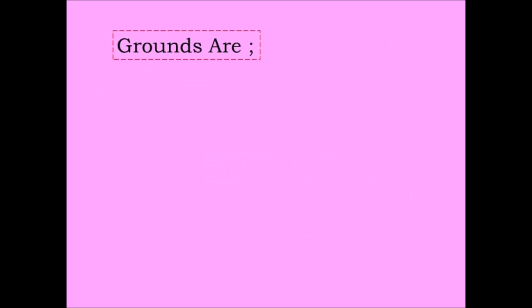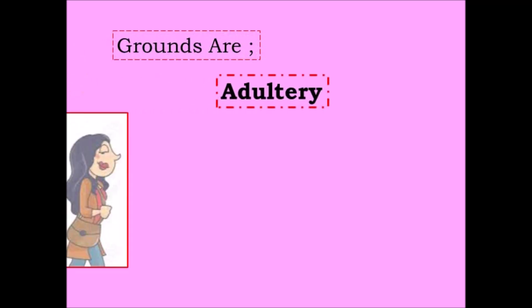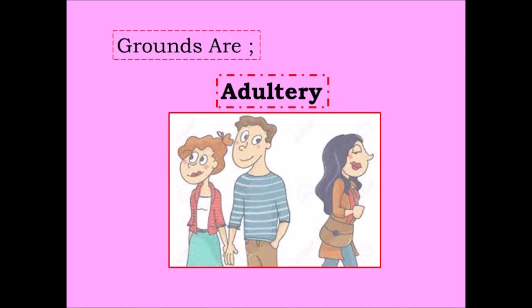Now let's talk about the grounds for divorce under the Christian Marriage Act. The first ground is adultery. If the husband or wife can prove the other party committed adultery, that is a ground for divorce. Importantly, you must add the name of the third party involved. If you have not been able to add that name, you must give the court reasoning for why you have not done so.